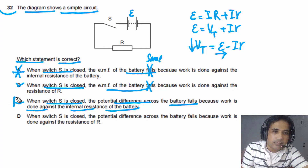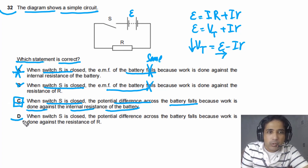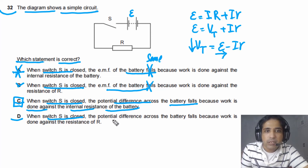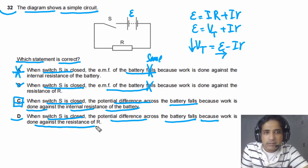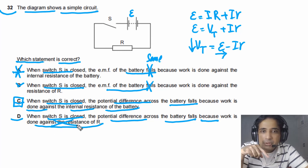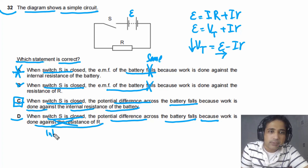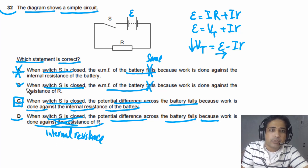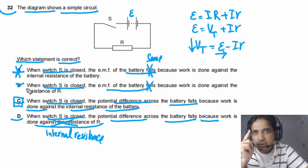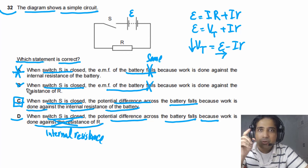Option D says the potential difference falls because work is done against resistance R — but this part is wrong. Terminal potential difference falls due to work done against the internal resistance, not R. So D is wrong and the answer is C. The key takeaway: EMF stays the same whether the switch is open or closed.